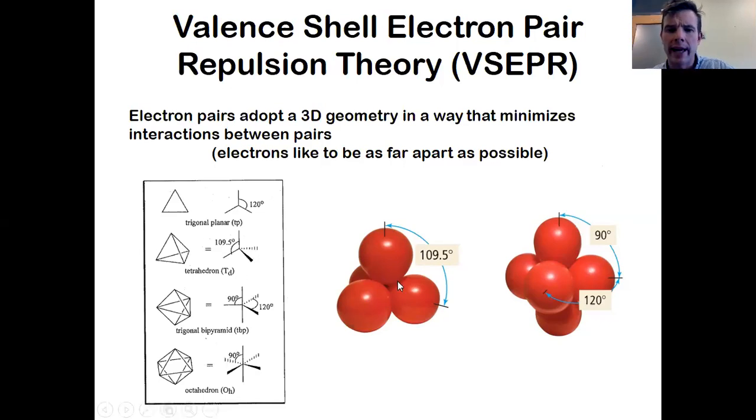One of the old textbooks I had had a nice example of that. If I imagined grabbing four balloons together in the middle and pinching them, the balloons would spontaneously arrange in this kind of shape so that they were as far apart as possible. If I pinched them in the middle, this is the shape they would form. Electrons do exactly the same thing.